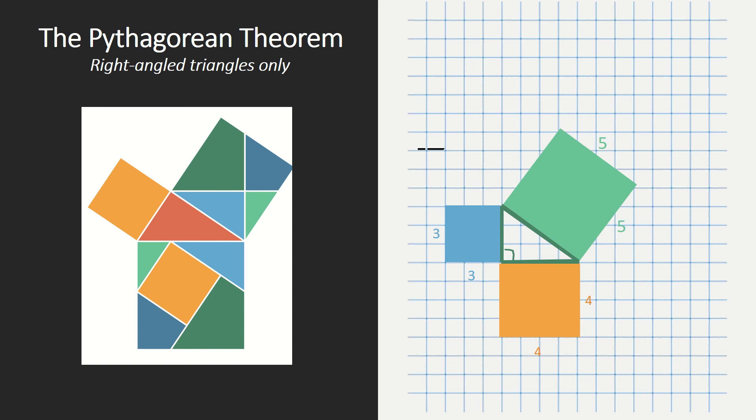They discovered that the areas are: 4 times 4 equals 16, 3 times 3 equals 9, and 5 times 5 equals 25.